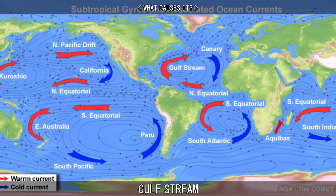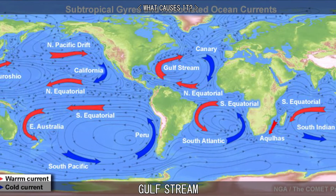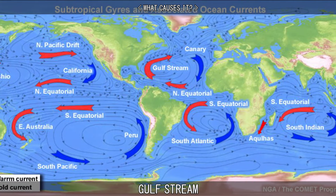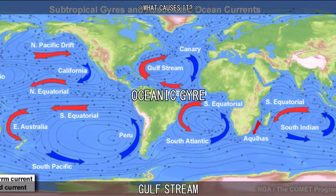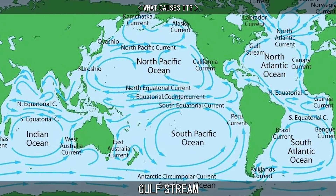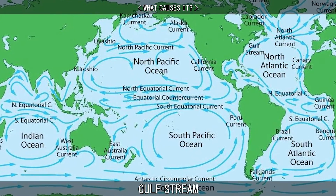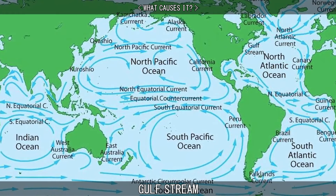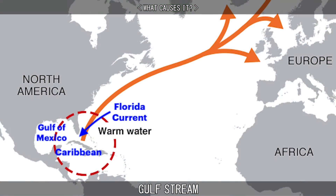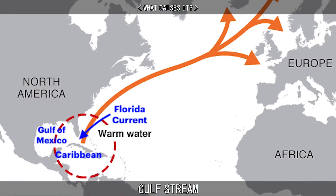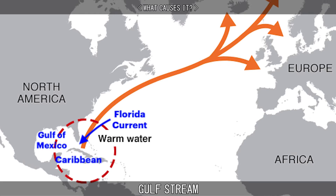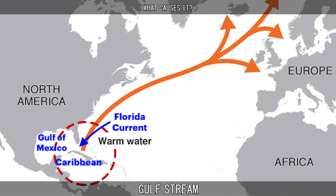The Gulf Stream is caused by a large system of circular currents and powerful winds called an Oceanic Gyre. There are five Oceanic Gyres on Earth, and the Gulf Stream is part of the North Atlantic Subtropical Gyre. The Gulf Stream brings warm water from the Gulf of Mexico all the way up to the Norwegian Sea.